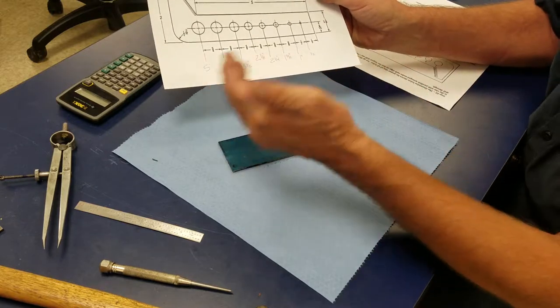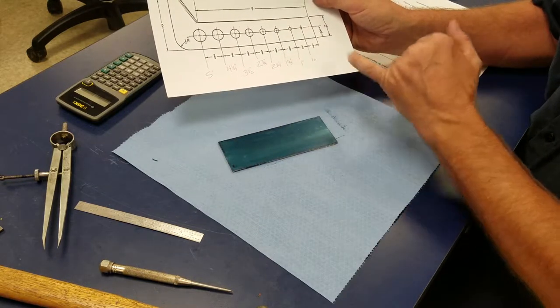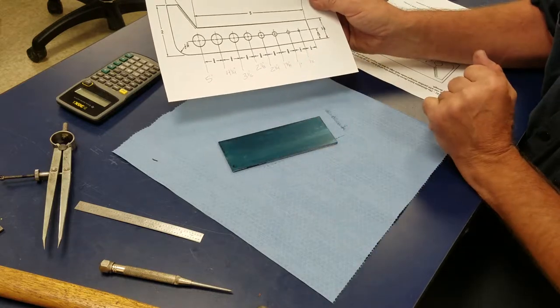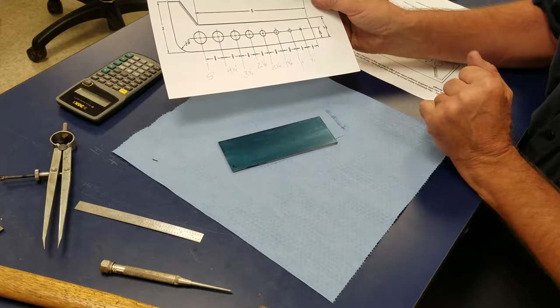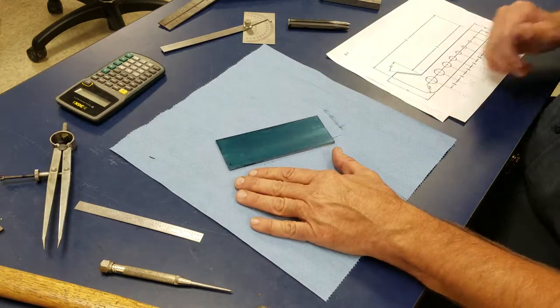Basically what I do before I do any machining or layout is I'll write some notes on my print that I will be needing as I go through. You can see that I've already laid it out with the blue dye-kem.